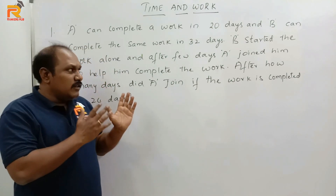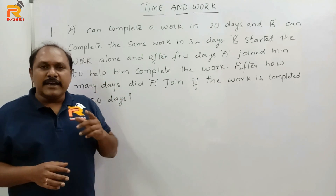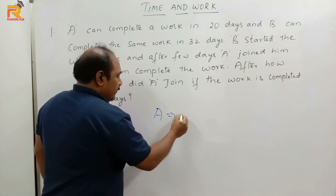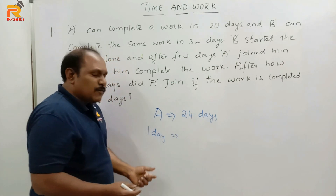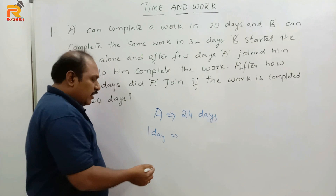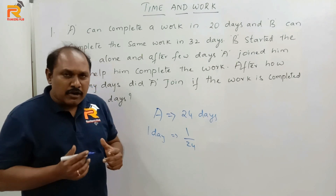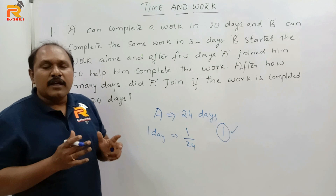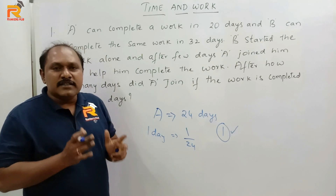Before we solve this question, let us learn a small basic point. If A can complete a work in 24 days, how much work will he do in one day? The answer is 1/24. Why is it 1/24 and not 2/24 or 3/24? Because generally in Time and Work we assume the total work as 1 or 100%. Using this basic point and understanding the question correctly, we will be able to answer the questions in a simple way.